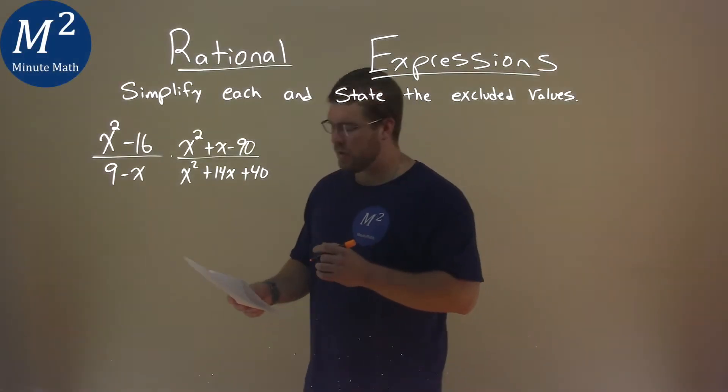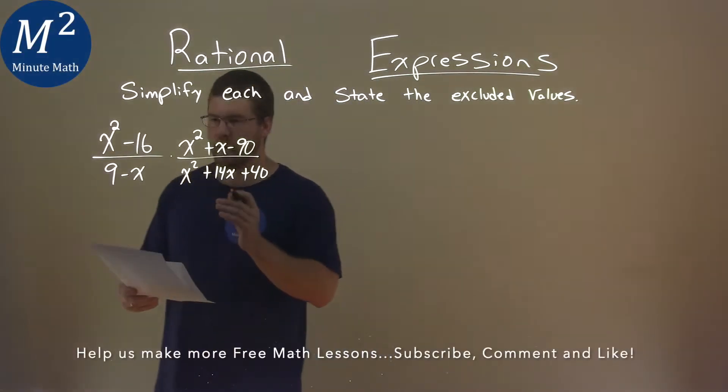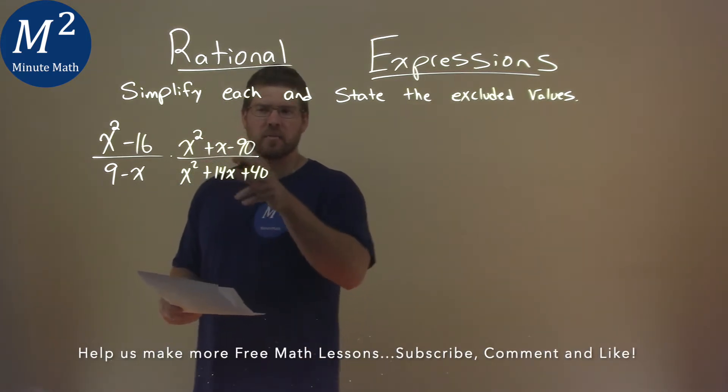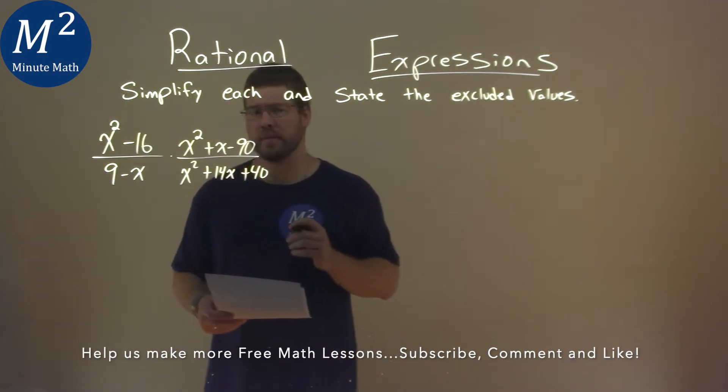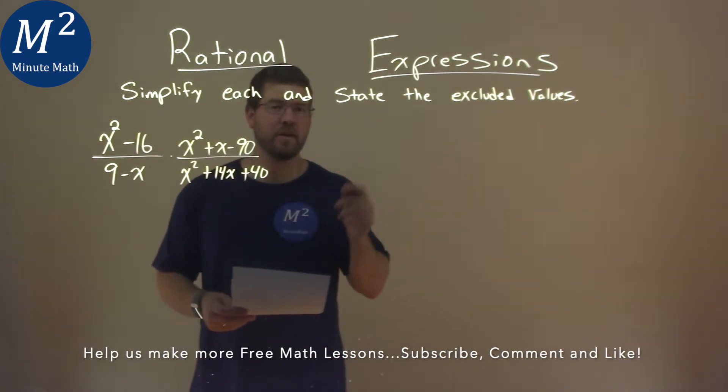We're given this problem right here: x squared minus 16 over 9 minus x times x squared plus x minus 90 over x squared plus 14x plus 40. We have to simplify this and state the excluded values.